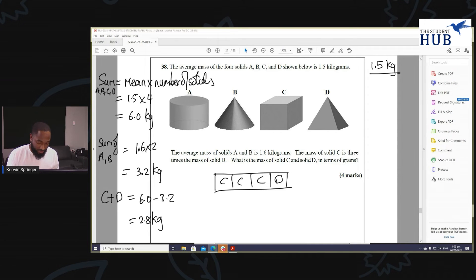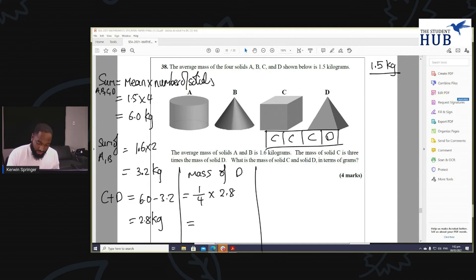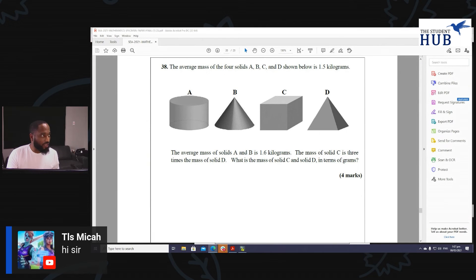What does this mean? How can we take advantage of this? Well, if we need to work out the mass of solid D, the mass of D is going to be one over four. Do you understand? D is a quarter of the mass of C and D, and the mass of C is going to be three quarter of 2.8.